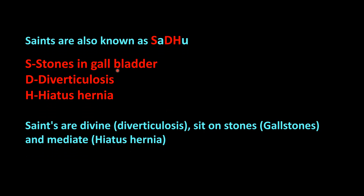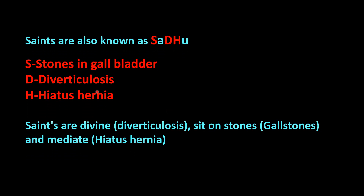What is Saint's triad? Saint's triad includes stones in the gallbladder, diverticulosis, and hiatus hernia. You can remember the mnemonic SADU — S for stones in gallbladder, D for diverticulosis, H for hiatus hernia. Another mnemonic is 'Saints are divine' — diverticulosis, they sit on stones (gallstones), and they meditate, which translates to 'mediate' meaning hiatus hernia. Remember Saint's triad.